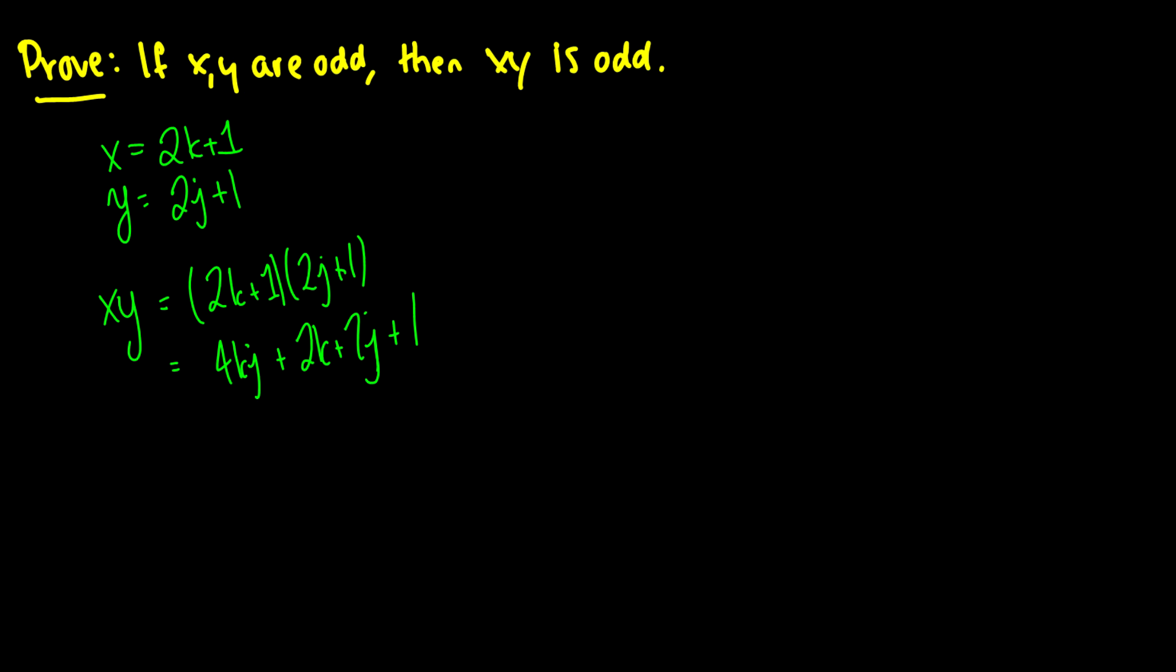Okay, so the key thing when you deal with these odd or even proofs is that you have a plus 1 at the end. And if this is the case, then we can say that yes, it is odd. So again, there's another example of a direct proof.